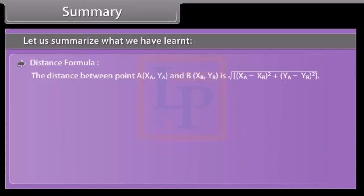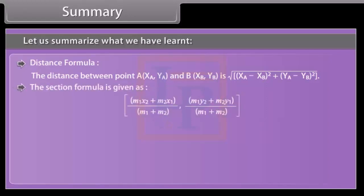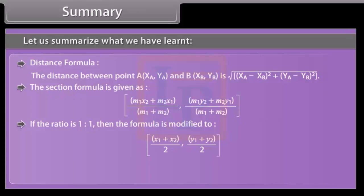Summary. Let us summarize what we have learned. Distance formula is the distance between point A(XA,YA) and B(XB,YB) is under root of XA minus XB whole square plus YA minus YB whole square. The section formula is given as M1X2 plus M2X1 by M1 plus M2, M1Y2 plus M2Y1 by M1 plus M2. If the ratio is 1 to 1, then the formula is modified to X1 plus X2 by 2, Y1 plus Y2 by 2. Area of triangle is 1 by 2 into X1 into Y2 minus Y3 plus X2 into Y3 minus Y1 plus X3 into Y1 minus Y2.